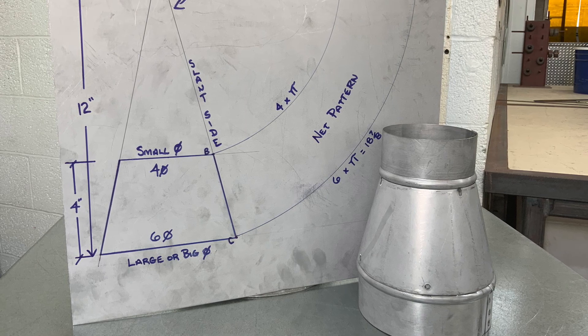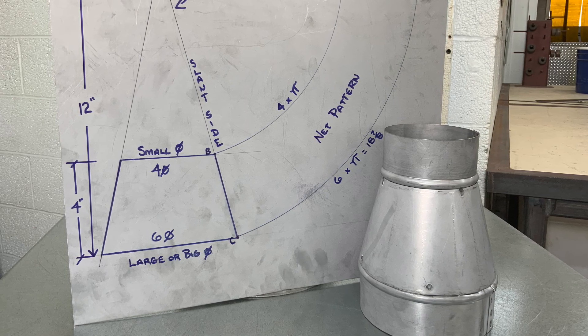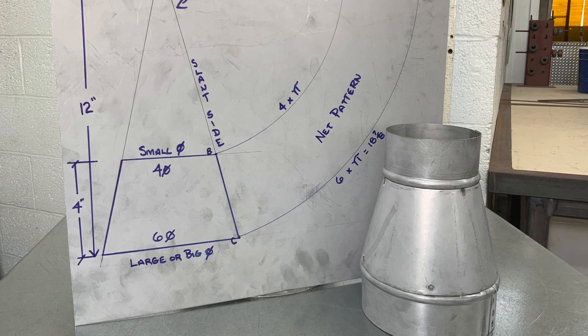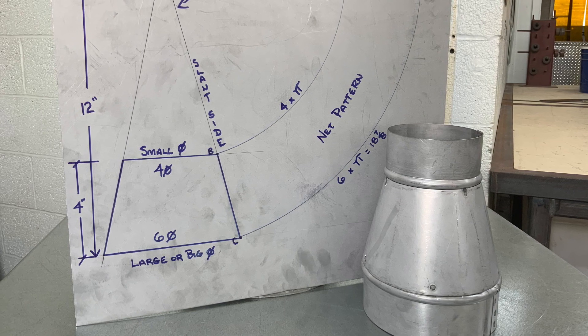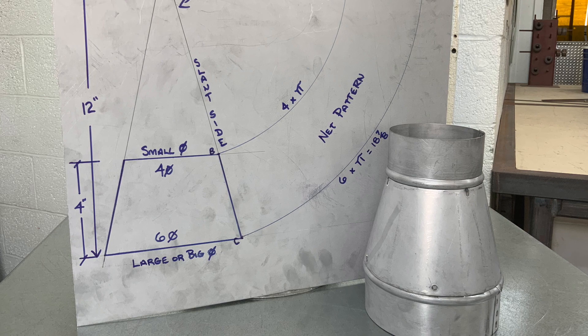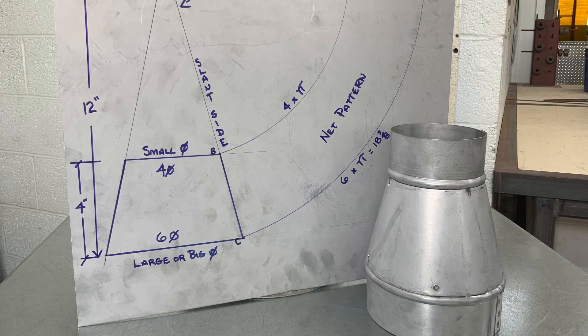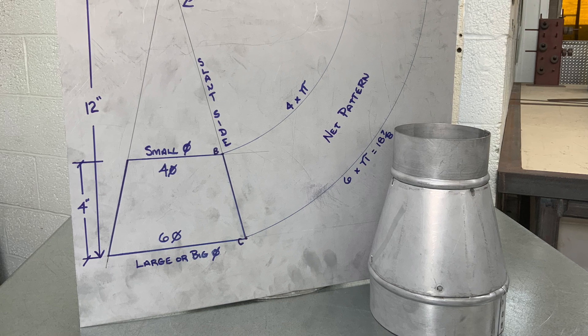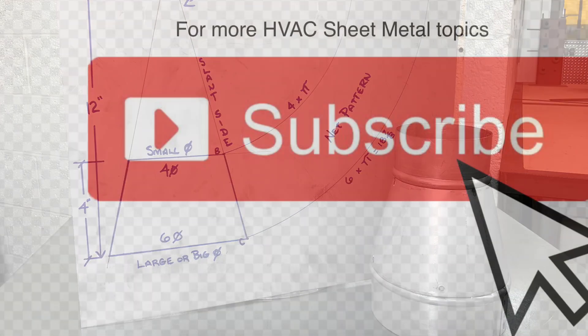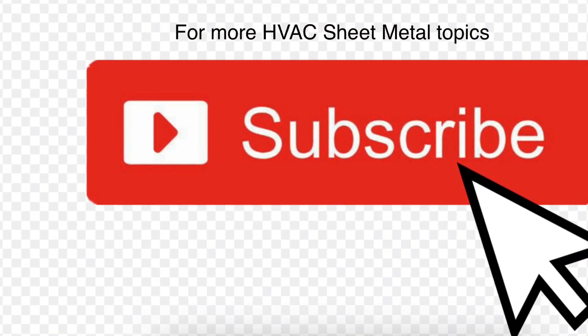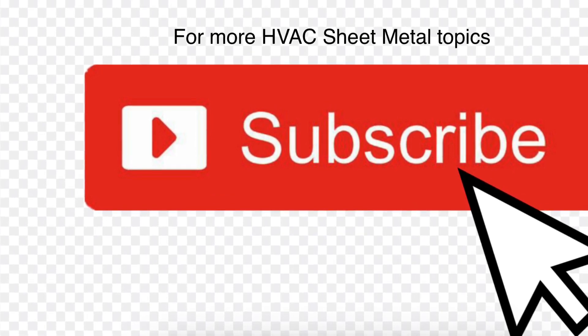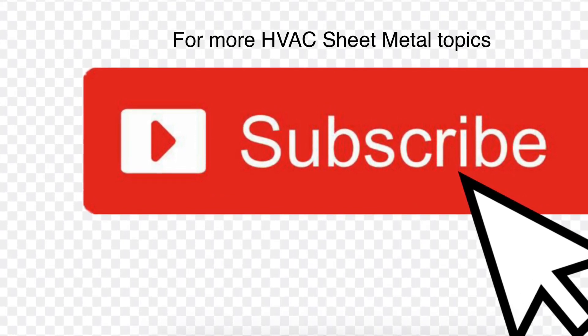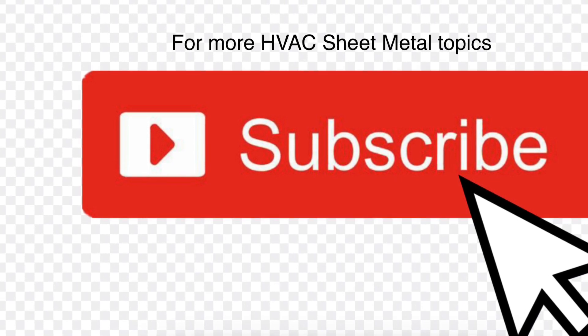Today's topic is how to fabricate sheet metal round reducers using radial line development. Before I get started, I'd like to thank those of you who take time to add comments. They help me moving forward and hopefully help you also. If you like the topics, simply subscribe.